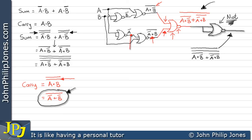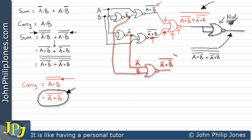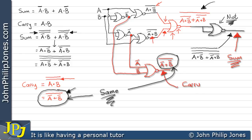Now we need to build the circuit for the carry bit. This simply involves taking a tap off NOT A and a tap off NOT B and putting them through a two-input NOR gate, which ORs them and then NOTs them. That matches the carry NOR expression exactly. So here we have the sum output and here we have the carry output — we've built a half adder using only NOR gates.